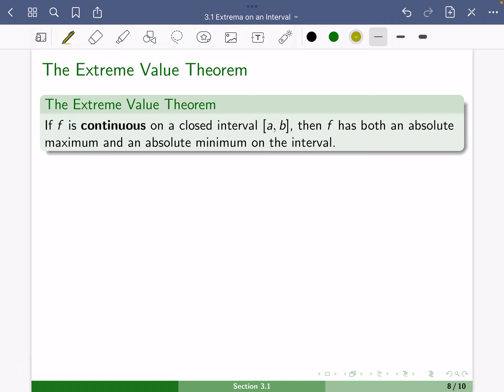if f is continuous on a closed interval from a to b, so we're going to have some interval, you have some value a, some value b. What does it mean to be continuous? Well, intuitively continuous means you can draw a picture without picking up your writing utensil. So maybe here's our function value at the left-hand endpoint, and maybe here's our function value at the right-hand endpoint.